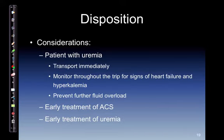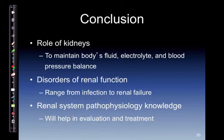Disposition considerations: transport the patient with uremia immediately, monitor throughout the trip for signs of heart failure or hyperkalemia, and prevent further fluid overload. Early treatment of acute coronary syndrome and early treatment of uremia are both important. In conclusion, the role of the kidneys is to maintain bodily fluids, electrolyte, and blood pressure balance. Disorders of renal function range from infection to renal failure. Knowledge of the renal system's pathophysiology will help you evaluate and treat the patient appropriately.